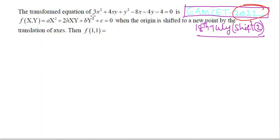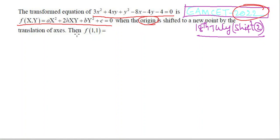Next problem: the transformed equation of 3x² + 4xy + y² − 8x − 4y − 4 = 0 is f(x, y) = ax² + 2hxy + by² + c. When the origin is shifted to a new point by translation of axes, find f(1, 1).